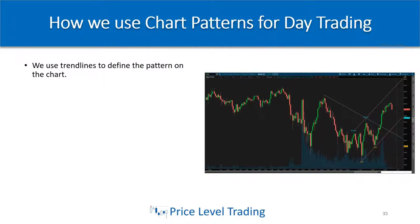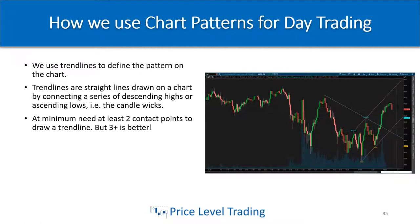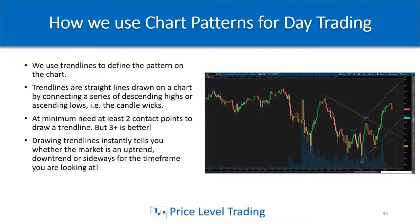So how do we use chart patterns for day trading? We use trend lines to define the pattern on the chart — that's essentially how chart patterns are formed. Trend lines are straight lines drawn on a chart by connecting a series of descending highs or ascending lows, otherwise known as the candle wicks. Some people draw them from the candle opens or closes, but I draw my trend lines from the wicks. A minimum of two contact points is needed to draw a trend line, though three or more is best. Drawing trend lines instantly tells you whether the market is in an uptrend, downtrend, or sideways for the timeframe you're looking at.